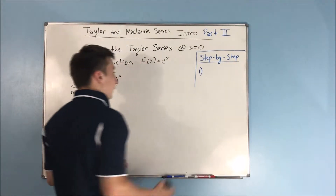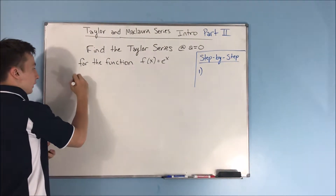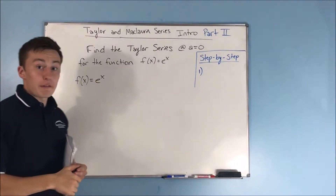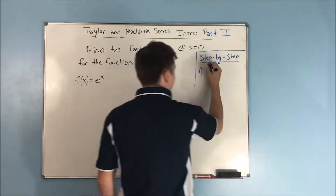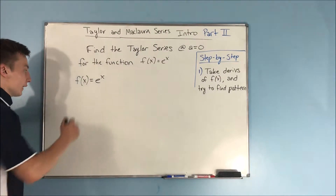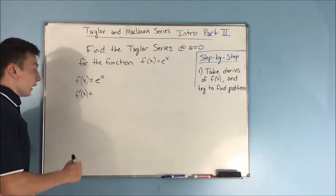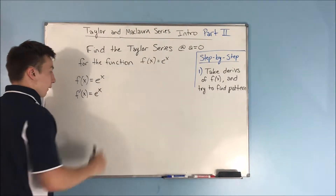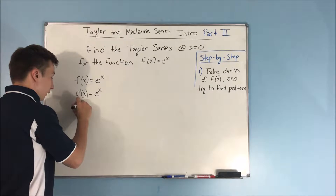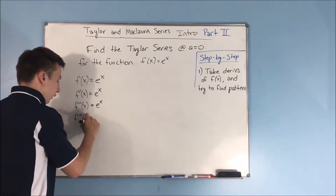The first step is going to be to take derivatives of your function, your f of x, and try to find a pattern. This is going to be a pretty easy example. We know that if we take a derivative here, we're just going to get e to the x. You can take the derivative as many times as you want and it's going to be e to the x. Second derivative: e to the x. Third derivative: e to the x.